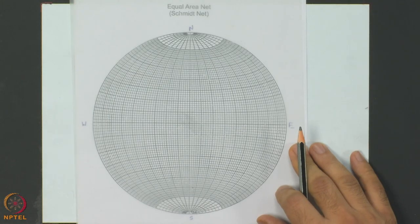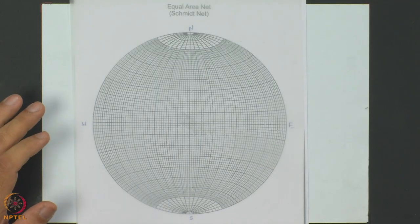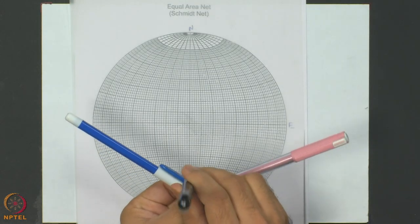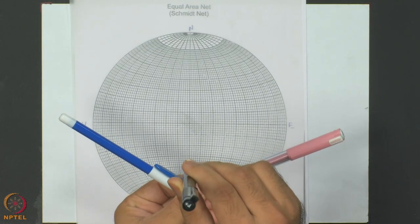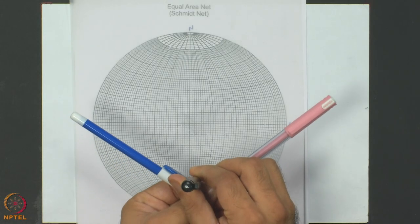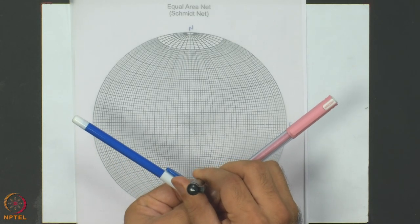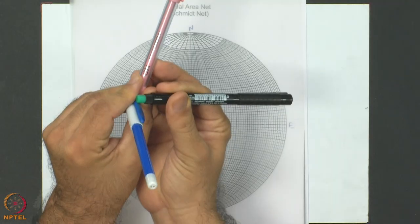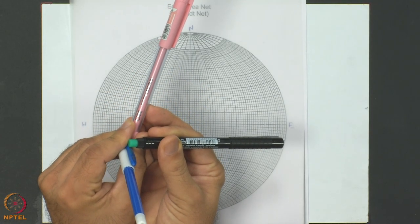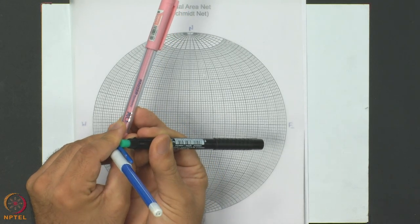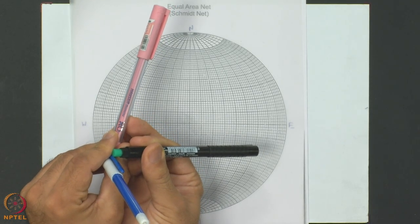I will first pick up the case of a non-Andersonian stress regime. What is that? It is a situation when the three principal stress axes are not perpendicular to each other in the conventional sense. The Andersonian case has one vertical and two horizontal perpendicular stress axes; a deviation from this is the non-Andersonian stress regime.